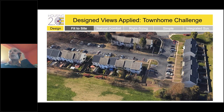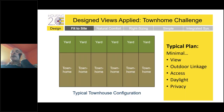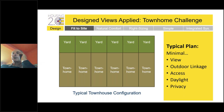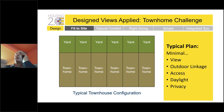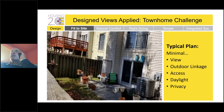There are building types where views are a challenge, and townhomes are one. Looking at a Google Earth image of typical townhomes — in front you're looking out at a parking lot, and in back you have a postage stamp backyard. The typical plan has minimal view because it's a very narrow rear, minimal outdoor linkage, minimal access to outdoor space, and minimal daylight. On two-story townhomes, people can also look into a neighbor's yard from second-story windows, making it the least optimized configuration.